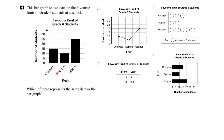In question four, we're given a graph that represents the favorite fruits of students in grade six. What we have to determine is which of the other representations of the data matches the data given here. Let's start by interpreting the data given in our graph.